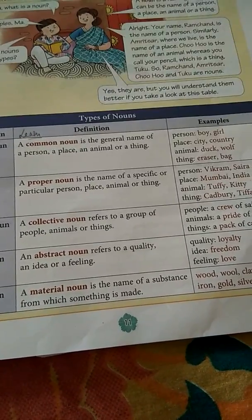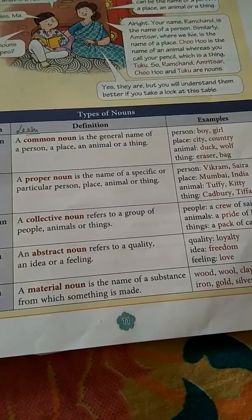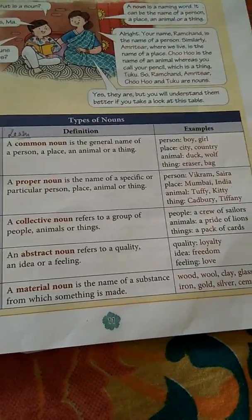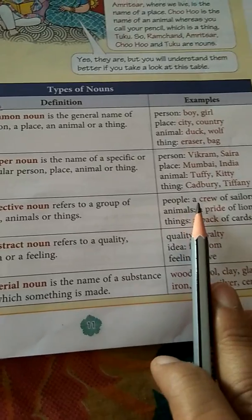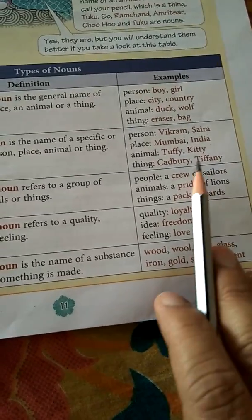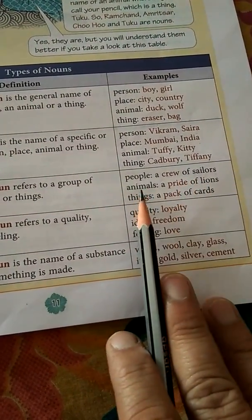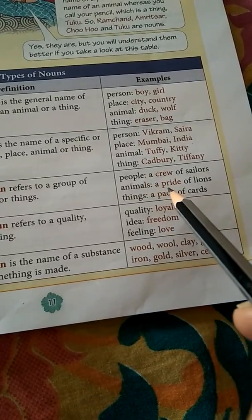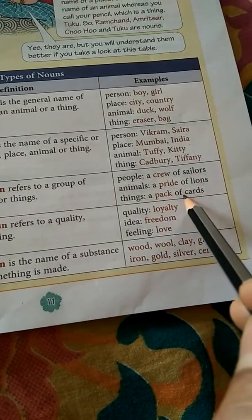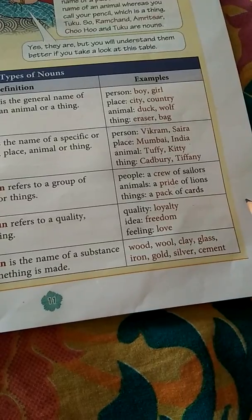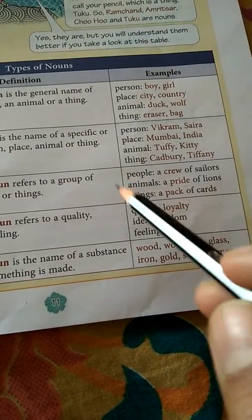Collective noun: when we talk about a group — of people, animals, or things — that entire group together is called a collective noun. For example, for people: a crew of sailors — all the many sailors together, a group of sailors, is called a crew. Animals: a pride of lions — many lions together is called a pride. Things: a pack of cards, a bouquet of flowers, a bunch of keys. These are all very common terms and they come under collective nouns.